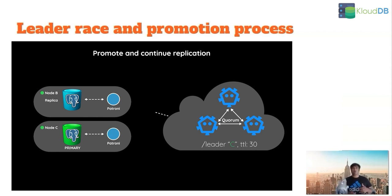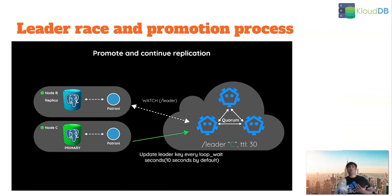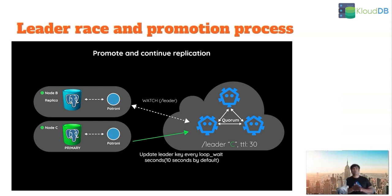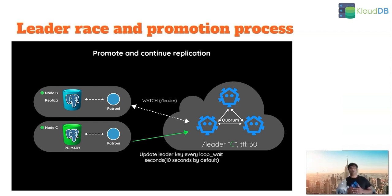After that, promotion happens and replication continues. Node C becomes the primary and node B points to the new primary. This is what happens internally when a node fails. There are more steps than this, but we gave a high-level overview of what happens internally with Patroni.